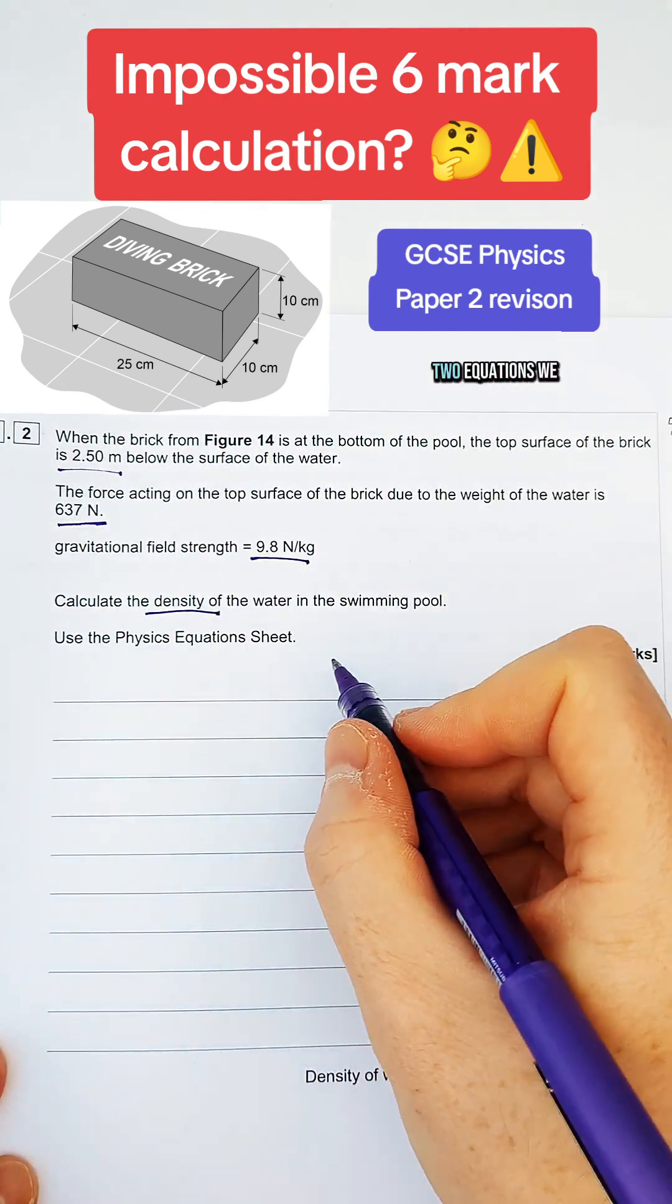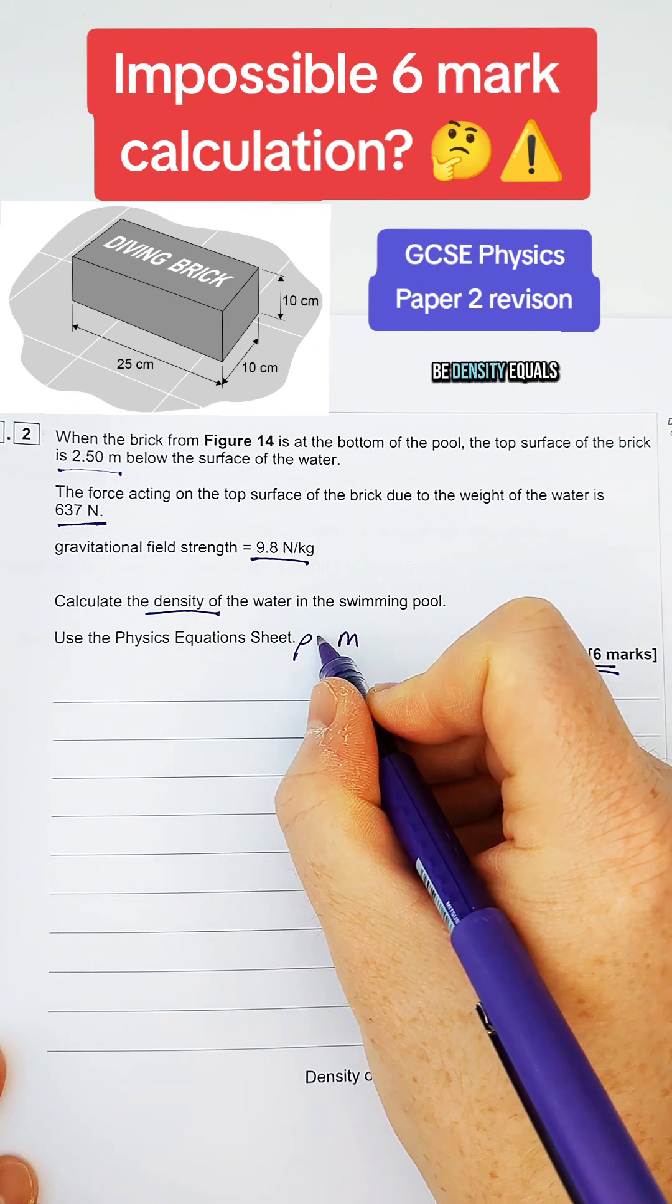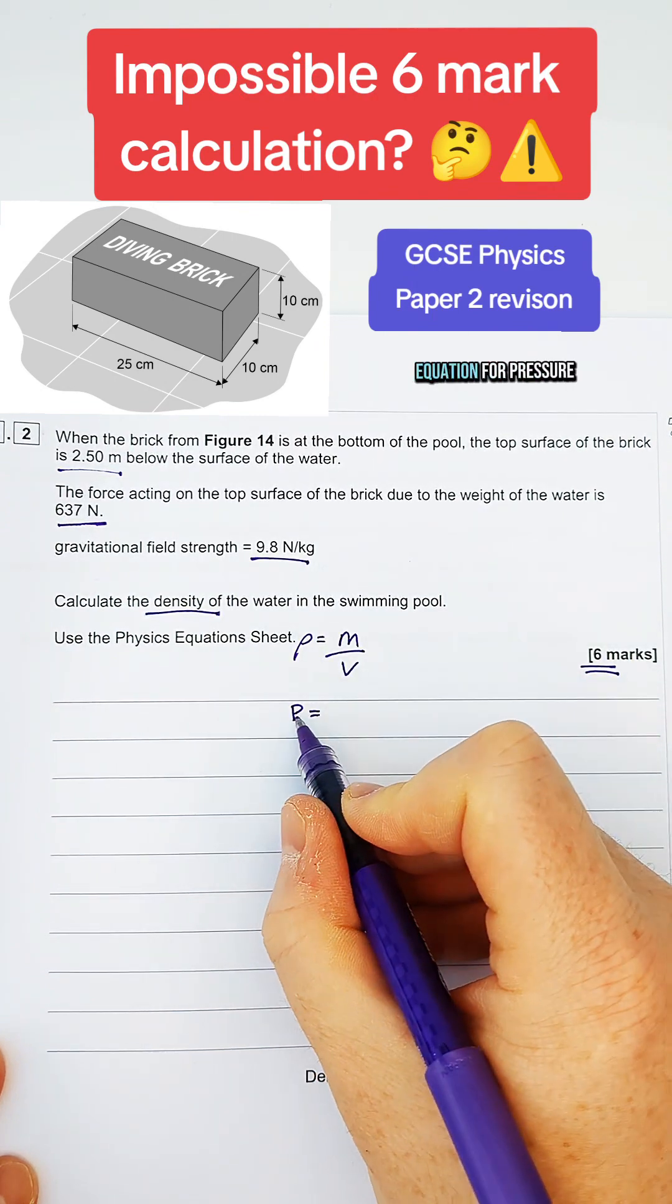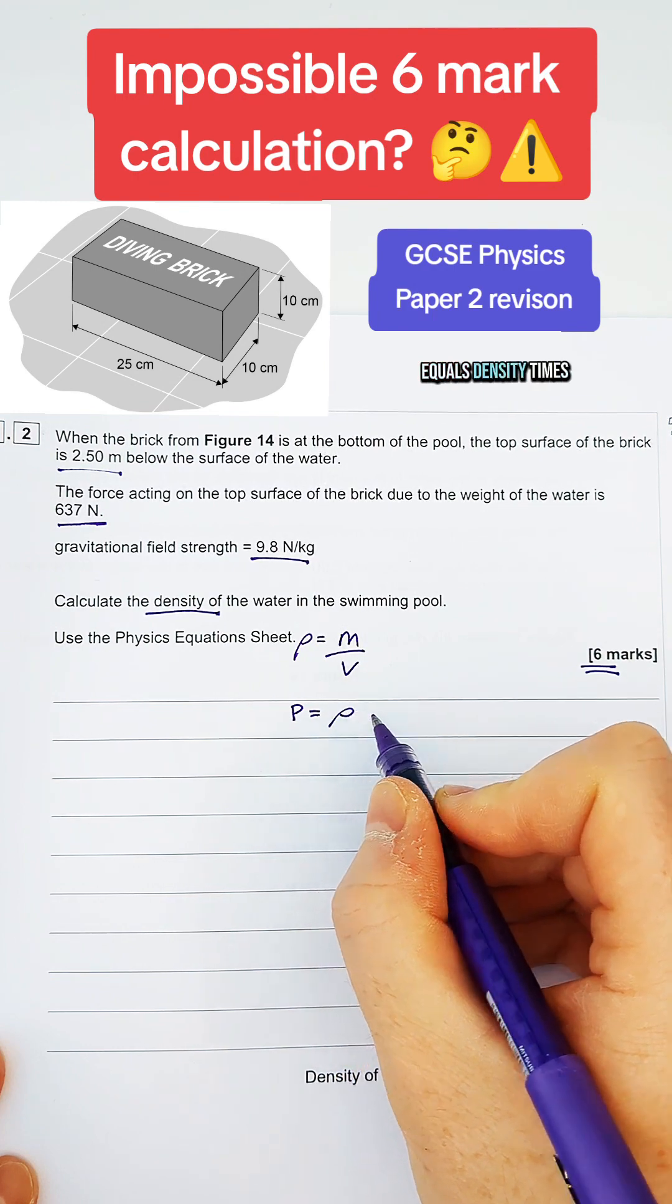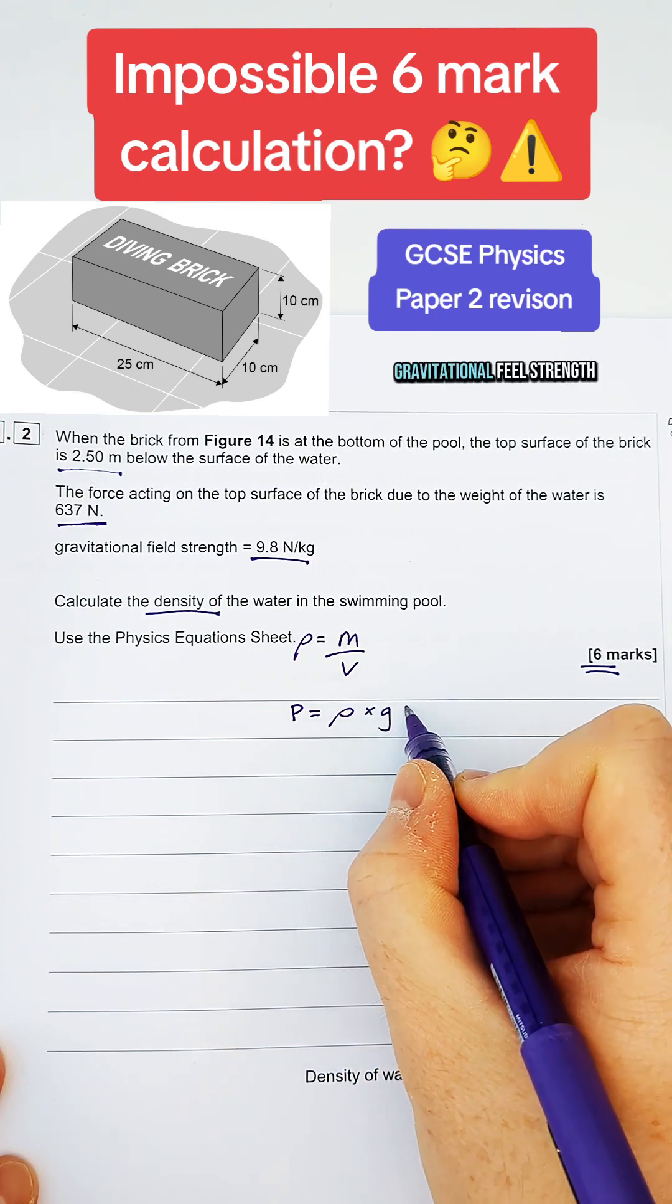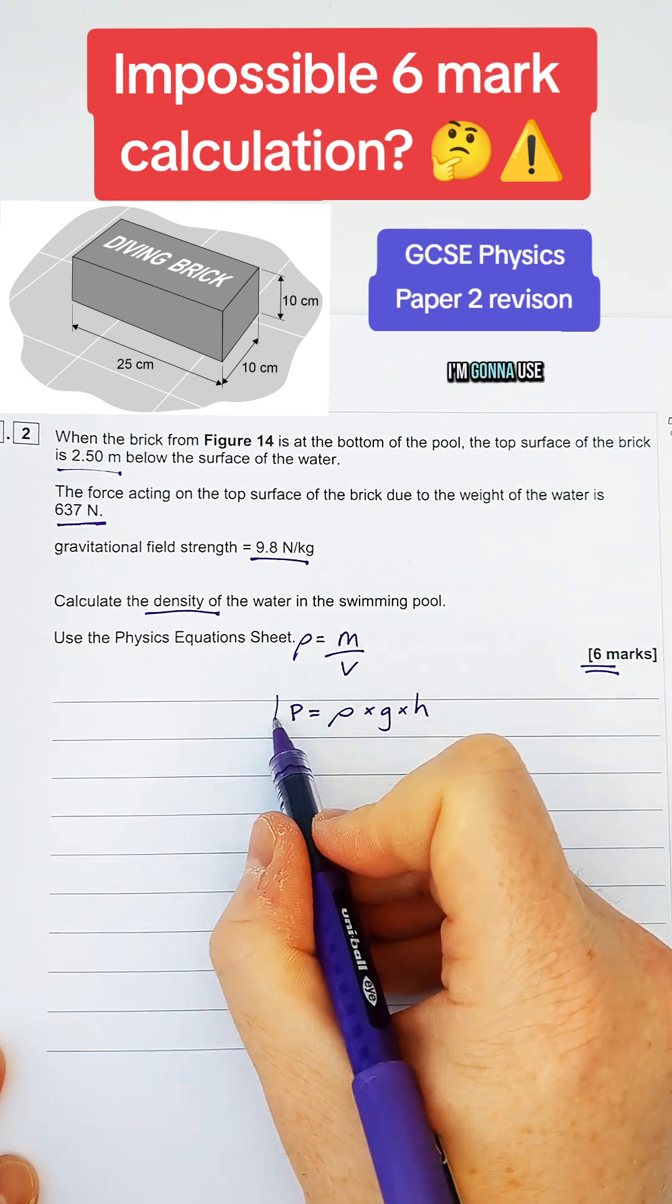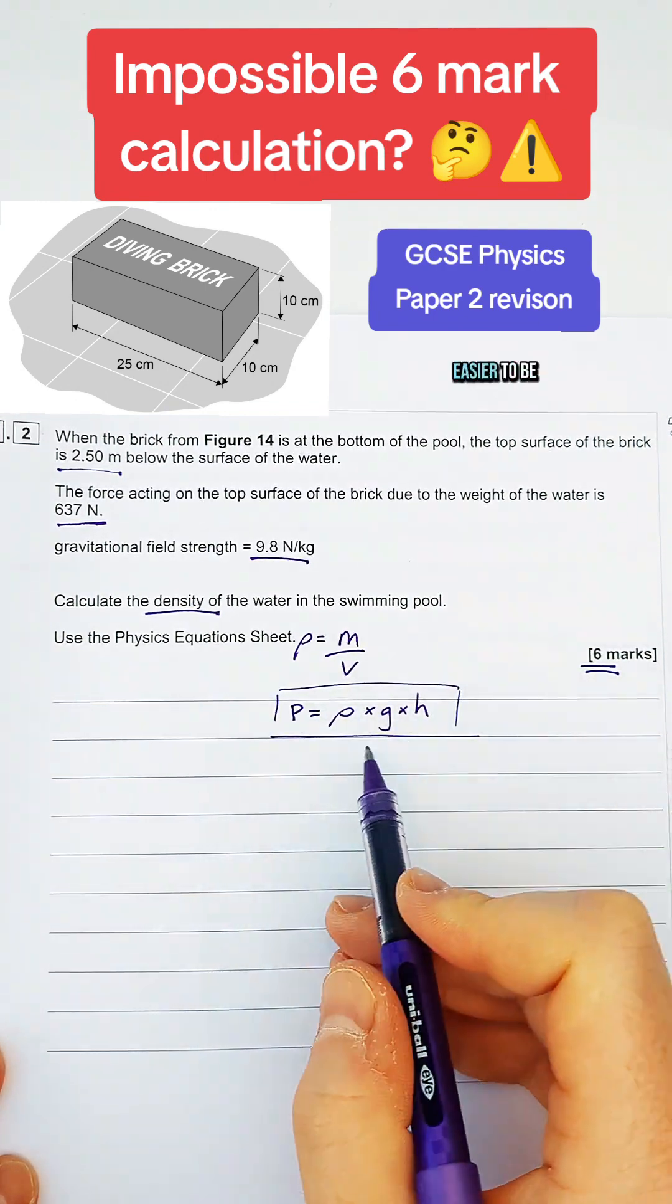Density, there are only two equations we could be asked to use. It's either going to be density equals mass over volume, or it's going to be this long equation for pressure, which is pressure equals density times by G, gravitational field strength, times by H. Now, you can use either. I'm going to use this one because I think it is a lot easier.